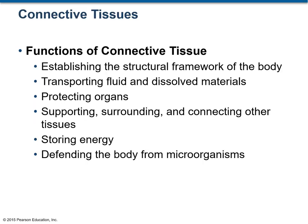Connective tissue has several functions. For example, it forms the structural framework of the body — an example of this would be the bones. Second, it transports fluid and dissolved materials, for example, blood. It protects organs; for example, fat and adipose tissue provides insulation, supports, surrounds and connects other tissue.